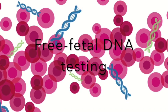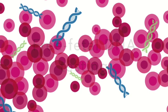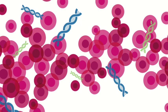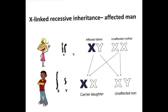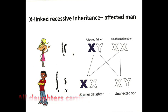If a female fetus is found, the parents can be reassured that they will not have an affected boy. If a male fetus is found, the parents can be offered further testing for the X-linked disorder, which may require an invasive test. If an affected man has a son, he always passes him his Y chromosome — therefore males affected by X-linked recessive disorders never have affected sons. If however he has a daughter, he will always pass them his altered X chromosome, so all of his daughters will be carriers.